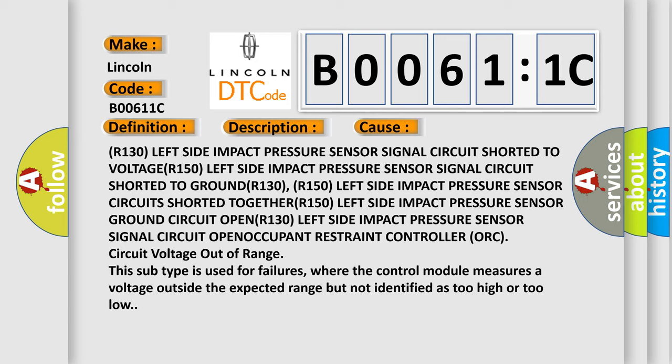This subtype is used for failures where the control module measures a voltage outside the expected range but not identified as too high or too low.